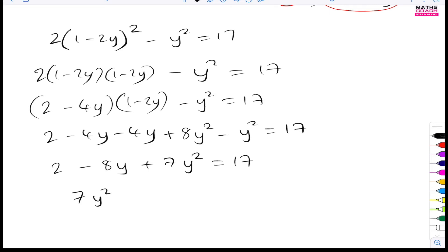So it's going to be 7y squared minus 8y. And now I'll do the 2 minus the 17. And 2 minus 17 is minus 15. And now I can make this equal to zero.